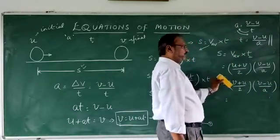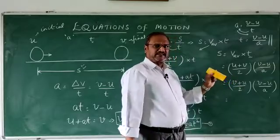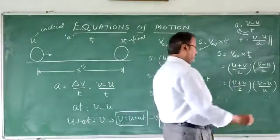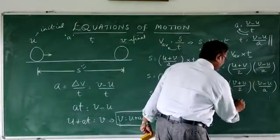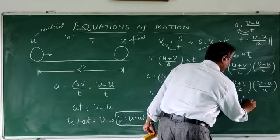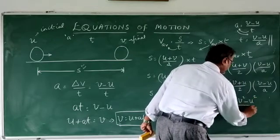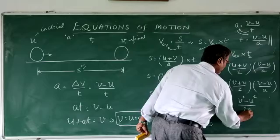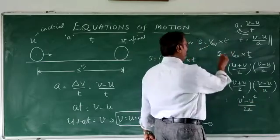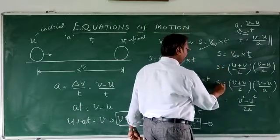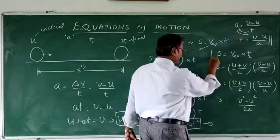So, what is this? A plus B into A minus B. That is A square minus B square. That is V square minus U square divided by 2 into A. What is this whole thing? This is the displacement.